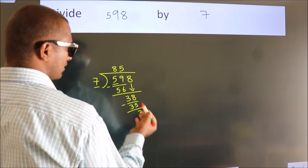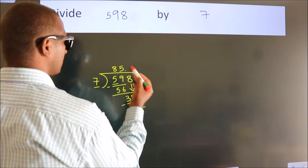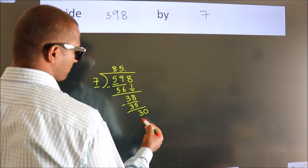After this, no more numbers to bring it down. So what we do is, we put a dot, take 0. So, 30.